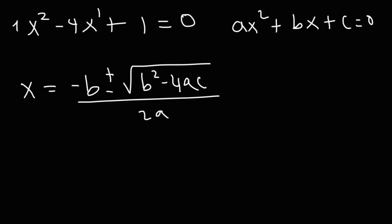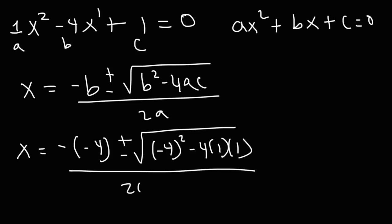In this example, a is 1, b is negative 4, c is 1. So we're going to have negative times negative 4 plus or minus the square root of negative 4 squared minus 4ac divided by 2a.